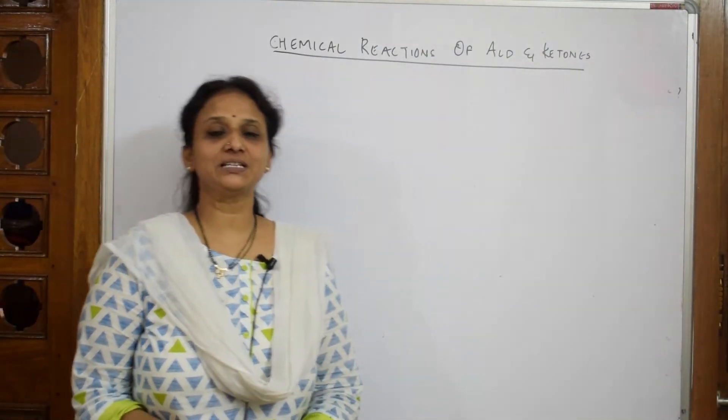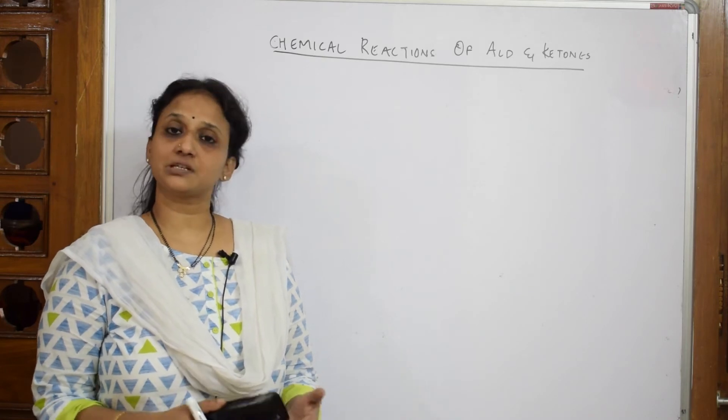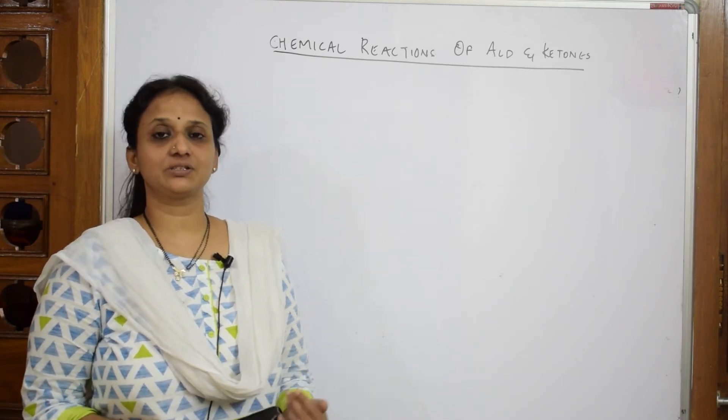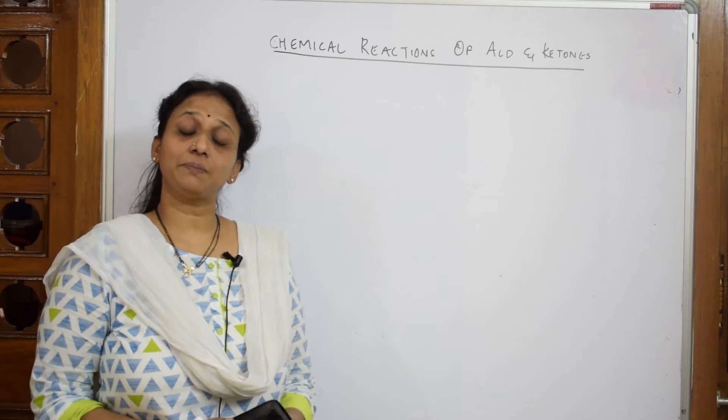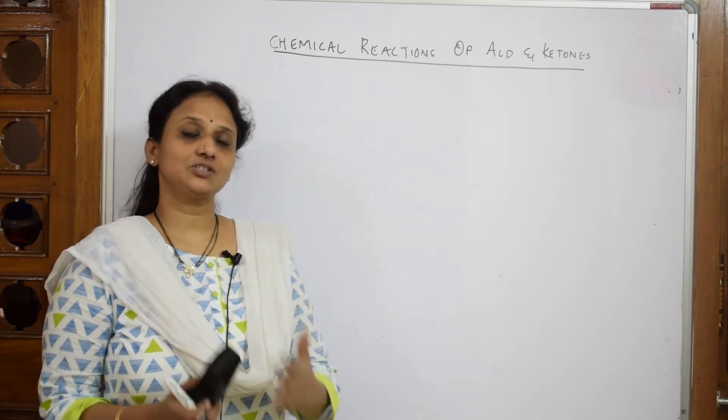We have completed the preparations and the physical properties of aldehydes, ketones, and carboxylic acids, along with some reasoning questions. Now we will be coming to part B of the chapter, which covers chemical properties.